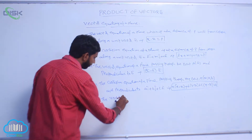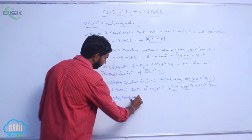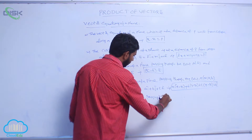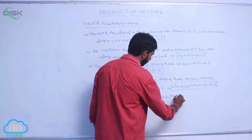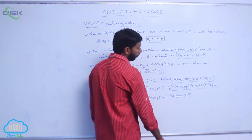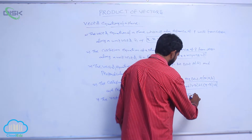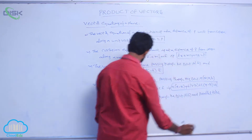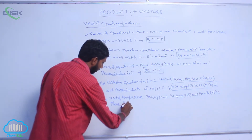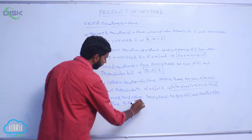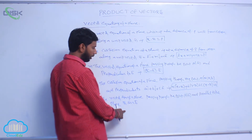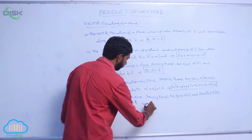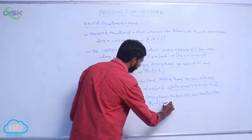The vector equation of a plane passing through the point A with position vector ā and parallel to the plane r̅·m̅ = q is: (r̅ − ā)·m̅ = 0.